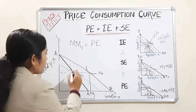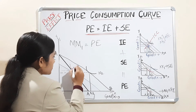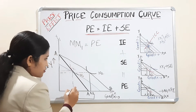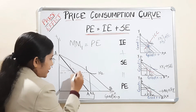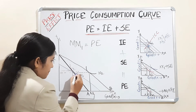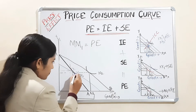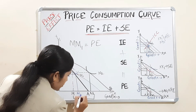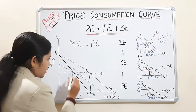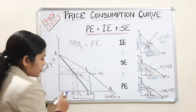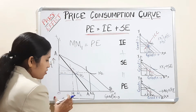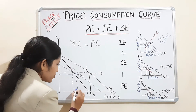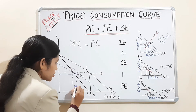After shifting the budget line downward, our new consumption point is M2. Initially we were consuming OM, and now we are consuming OM2. Therefore, M-M2 is your substitution effect.